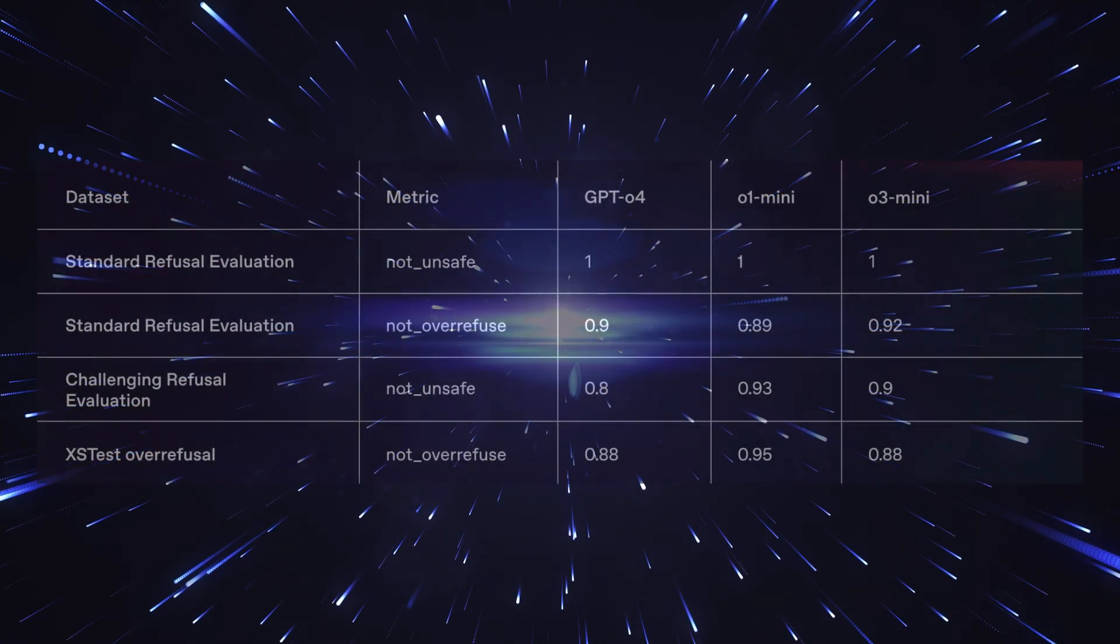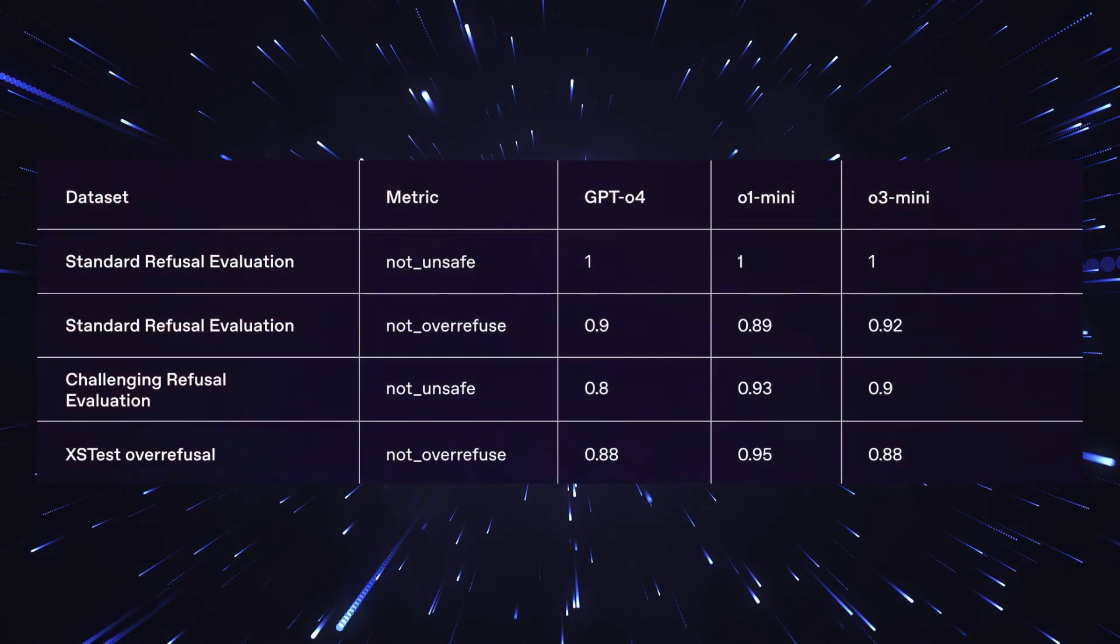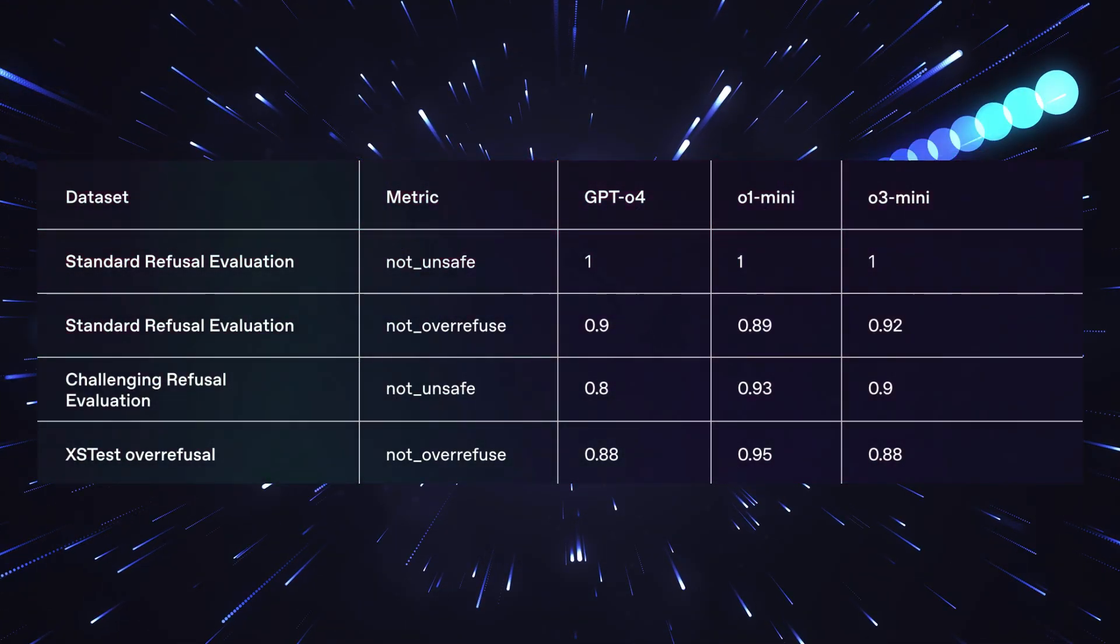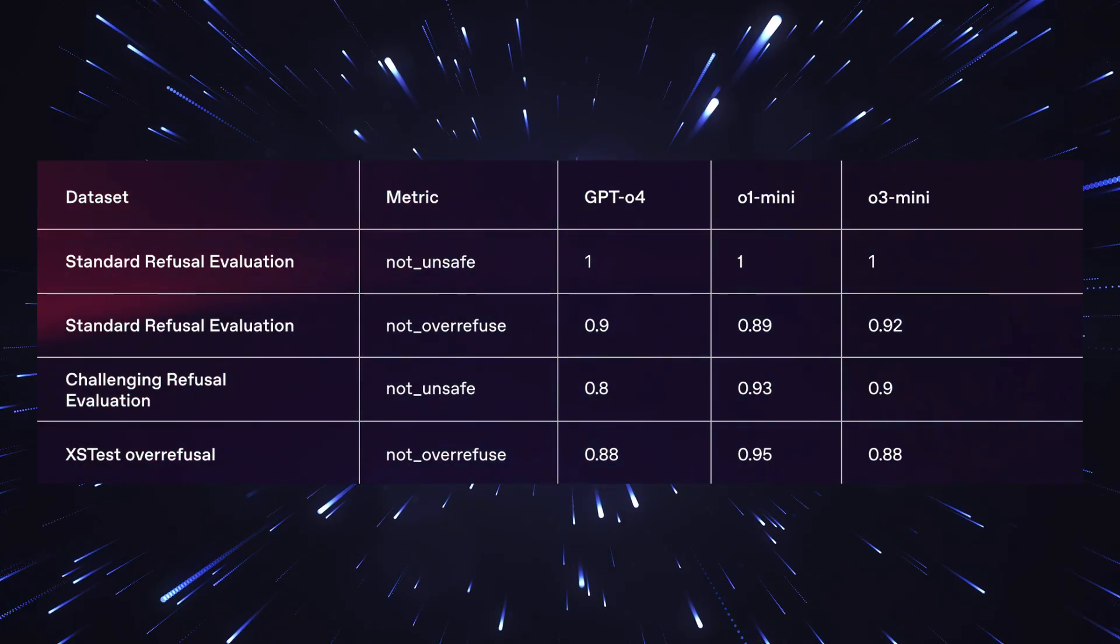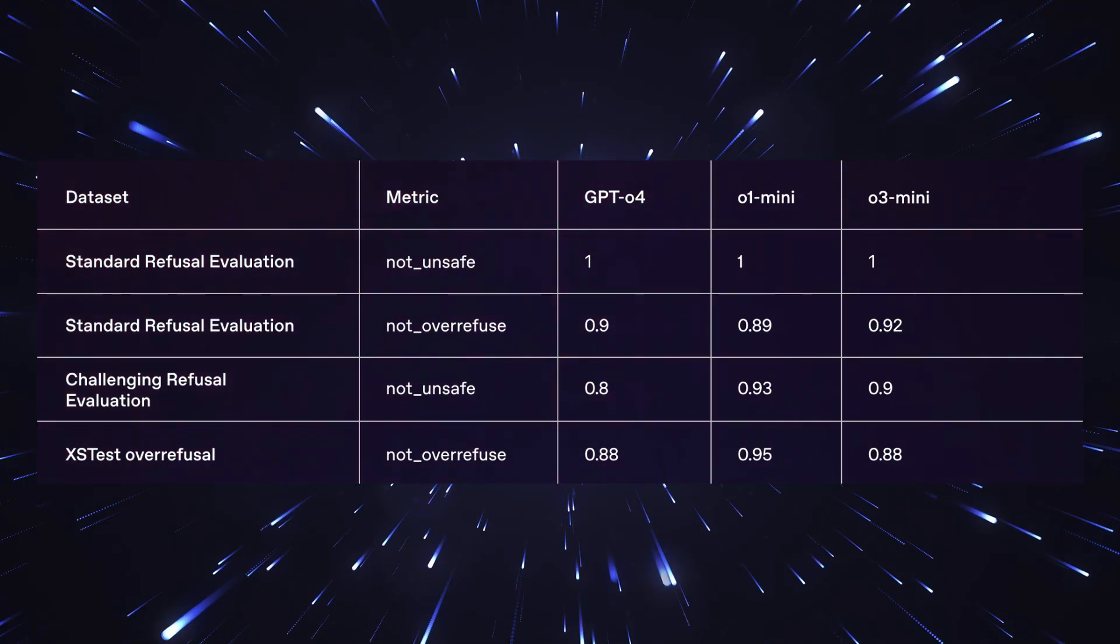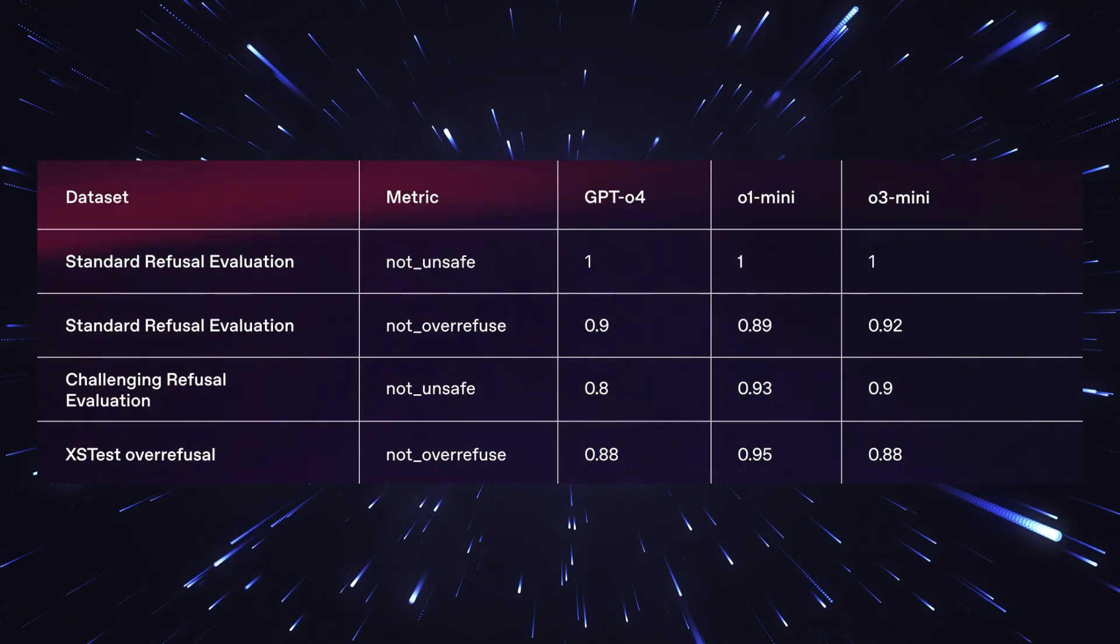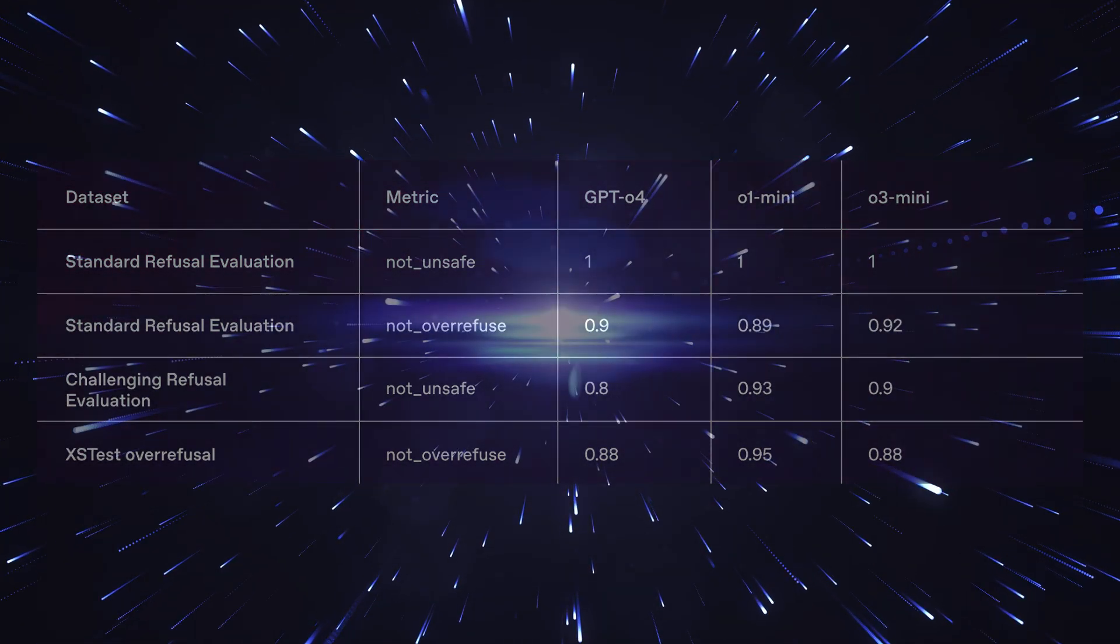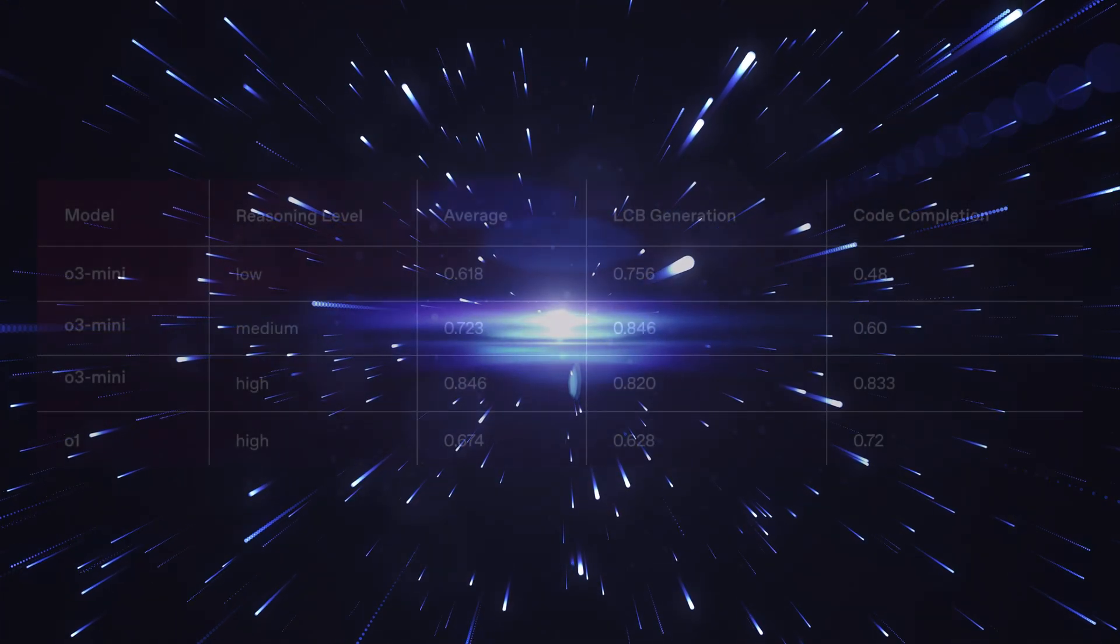Let's look at some concrete examples that really show how incredible this model is. Imagine you give O3 Mini the task of programming a computer game, in this case, the classic snake game. Not only does it create the code in seconds, it can also immediately implement an AI that plays the game autonomously and continuously improves through machine learning. This is really incredible because we're not talking here about simple if-then commands, but about a neural network that is optimized through reinforcement learning.